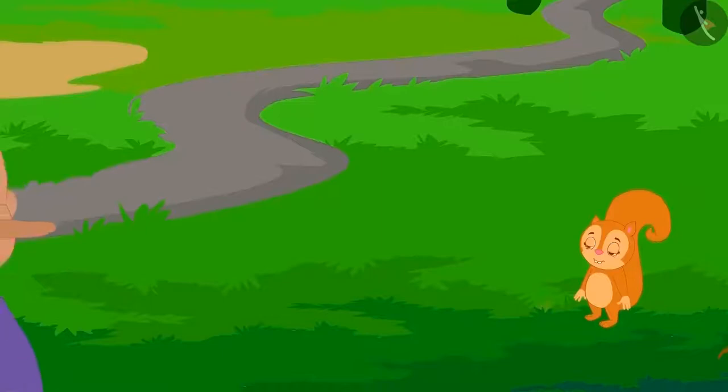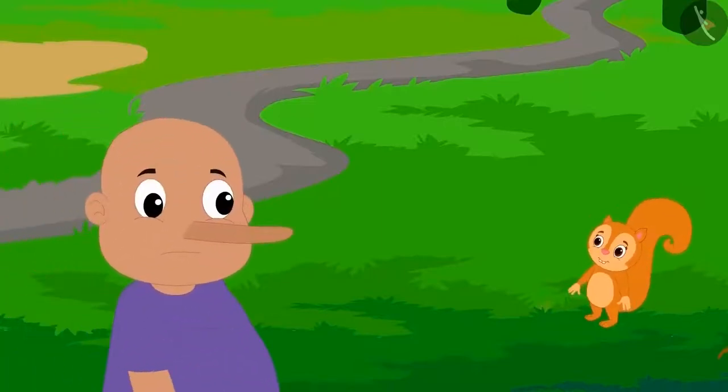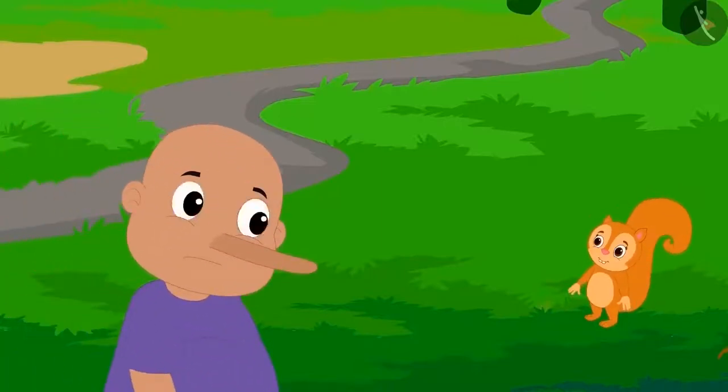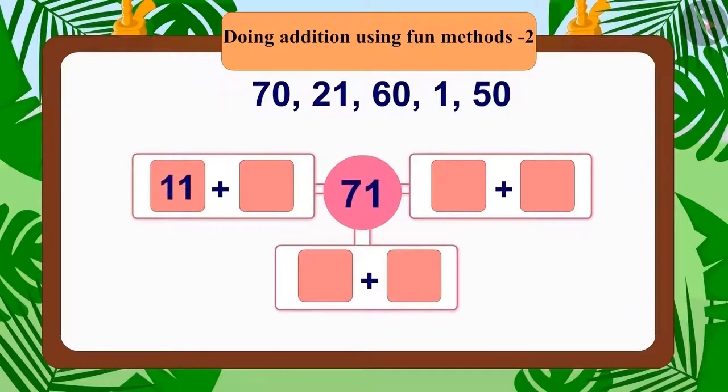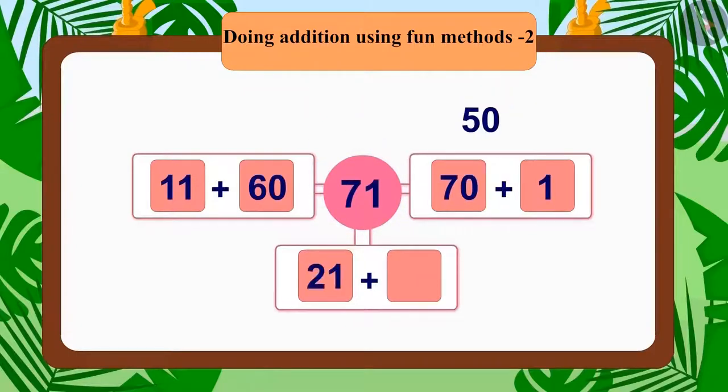Chanda added 60 and 11 to make 71. Then she added 70 and 1 to make 71 in the other way. And finally, she added 21 and 50 to make 71 in the third way.